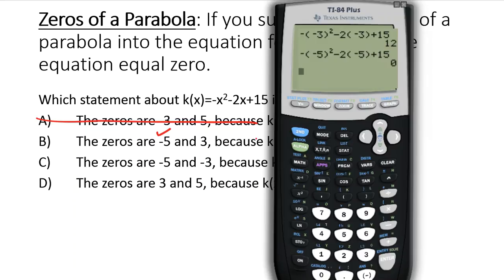I also have to check positive 3. So again, I'm going to scroll up using my arrow button in the upper right-hand corner of the calculator and press enter on top of the expression I've already typed out.